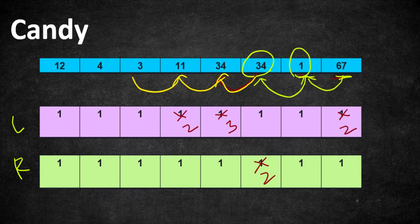Moving to 34 and 11: 11 is less than 34, so no extra candies for 11. Moving to 11 and 3: 3 is less than 11, so no extra candies for 3. Moving to 3 and 4: 4 has a higher rating, so we update 4's position with 2 candies, since the child with rating 3 has 1 candy and 4 deserves one more. Moving to 4 and 12: 12 is higher than 4. Since 4 has 2 candies, 12 needs at least one more, so we update it with 3.